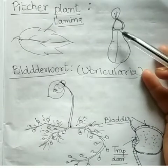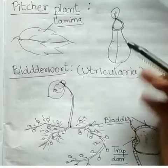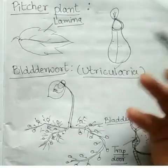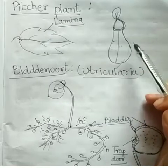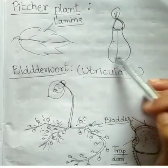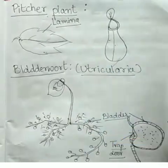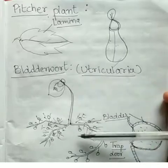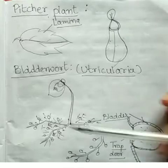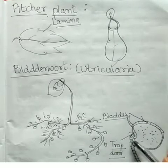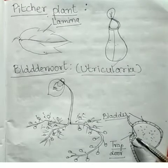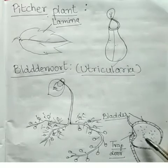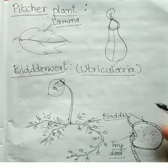After some time, the insect dies inside the pitcher. The walls of the pitcher secrete digestive juices which digest the proteins in the insect's body to form simpler nitrogen compounds. These compounds are then absorbed by the walls of the pitcher and used by the whole plant. The next example is bladderwort (Utricularia). This plant has bladders with a trap door — when minute organisms enter the trap door, they cannot come out and get trapped inside the bladder.